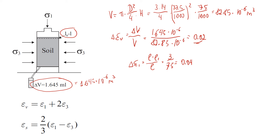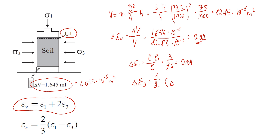Next we find the change in the radial direction. We rearrange the volumetric strain formula to get epsilon 3, which equals one half times (volumetric strain minus axial strain). That gives us approximately negative 0.01, meaning the sample shrinks in the radial direction.